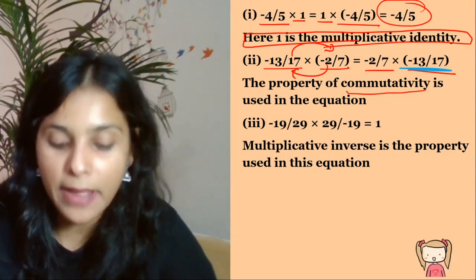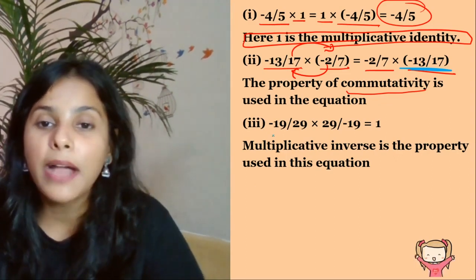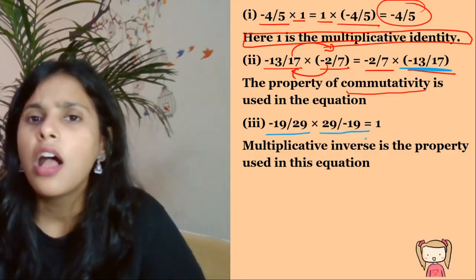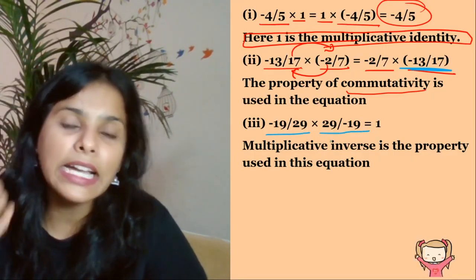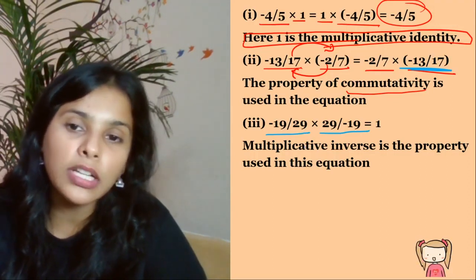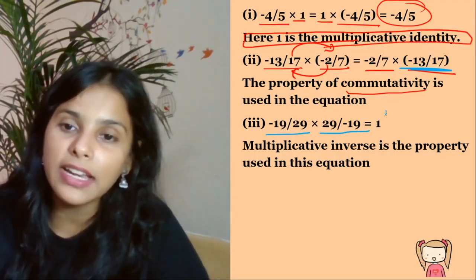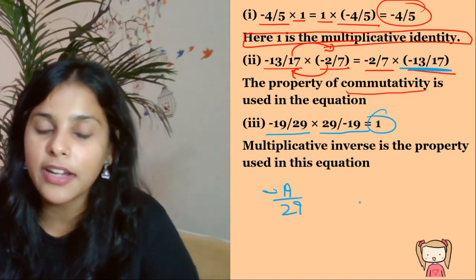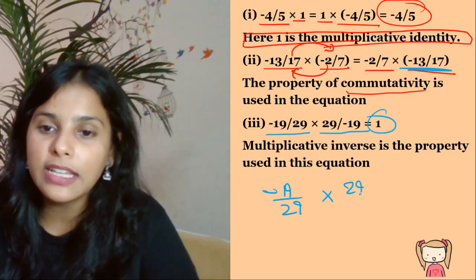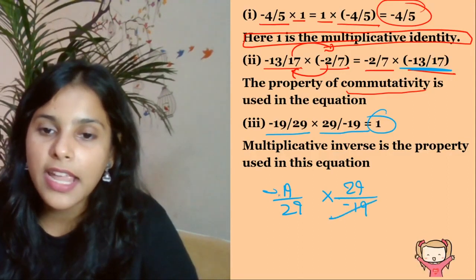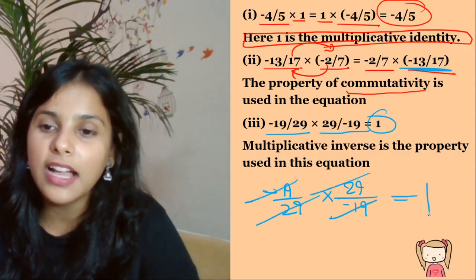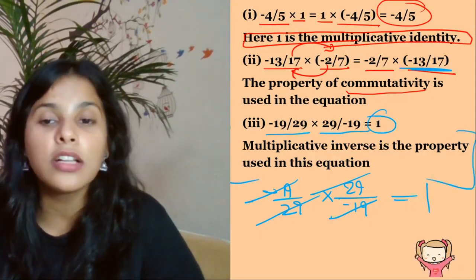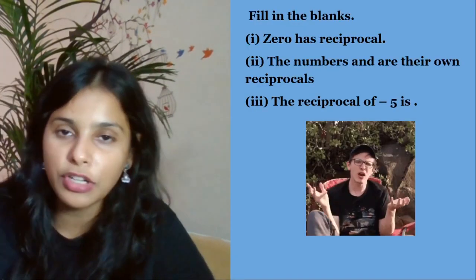Third part: -19/29 × 29/19. When you take the reciprocal of a number and multiply, you get 1. The reciprocal of -19/29 is 29/(-19). These cancel out and give 1. So the property used here is multiplicative inverse.